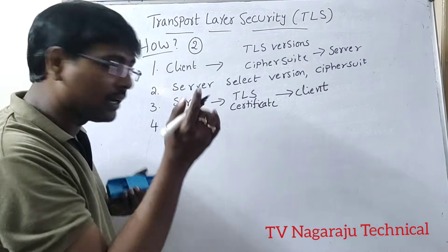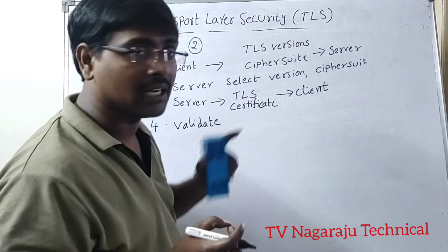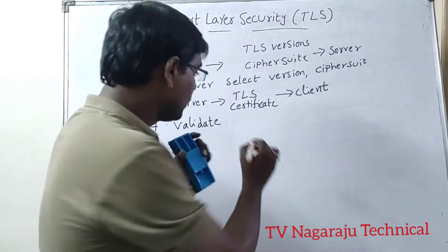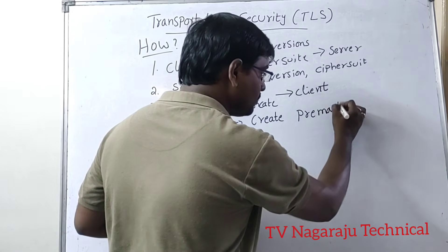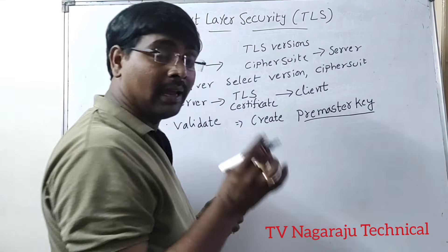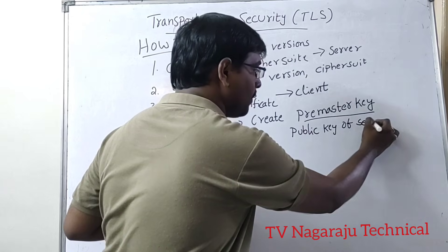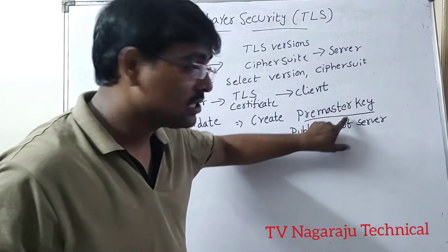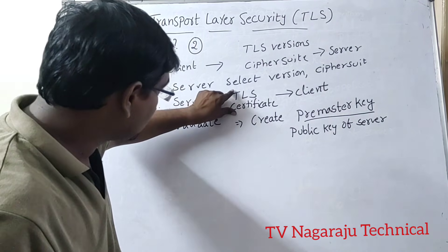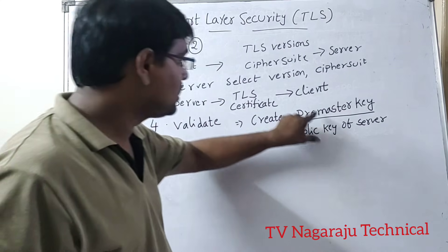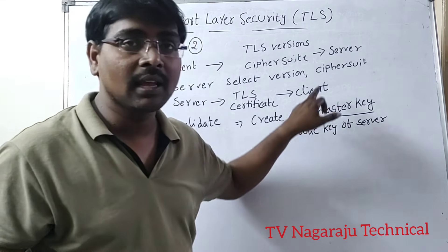Once the client receives the TLS certificate, it validates the certificate. If the certificate is valid, the client creates a pre-master key, and that pre-master key is encrypted using the public key from the certificate. The certificate itself contains the public key, so the client automatically knows the public key of the server.